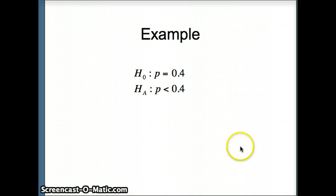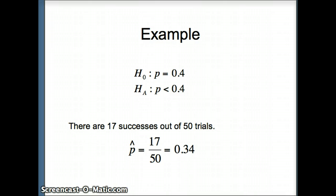So here's an example. We're going to say H-naught p equals 0.4 versus H-a p is less than 0.4. This is a one-tail test to the left. We'll just make note of that before we continue. Now here's our information. We're told that there are 17 successes out of 50 trials. So p-hat will be 17 out of 50, and as a decimal that is 0.34.